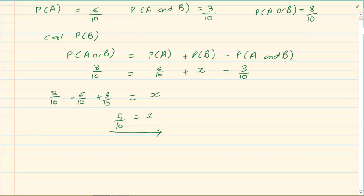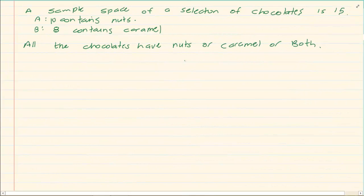Now that is one of the type of questions that they will give you. Another type of question that they will give you is that you must remember that the P's and the N's are very linked. Look at the next one. Now you see they are not giving you a certain set of numbers. They are telling you a sample space of a selection of chocolates is 15. So in other words, there is 15 things in the selection. We don't know what they are, but there is 15 pieces of it. Now 10 contains nuts, 8 contains caramel. All the chocolates have nuts or caramel or both. Now we can see there is obviously a both, which means there is an overlap.